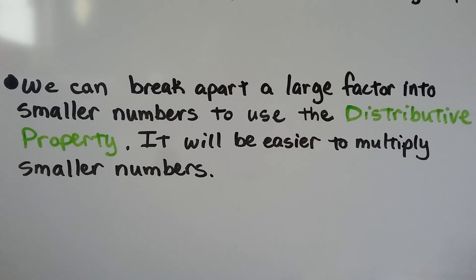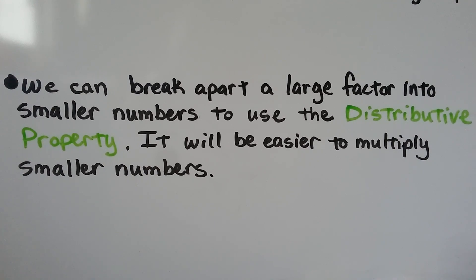We can break apart a large factor into smaller numbers to use the distributive property — it will be easier to multiply smaller numbers, maybe multiplication facts you already know.